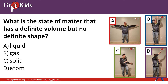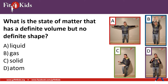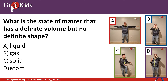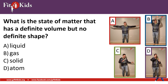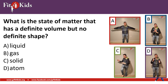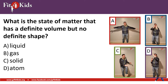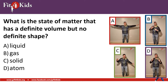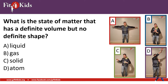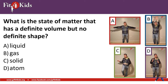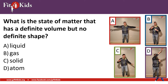What is the state of matter that has a definite volume but no definite shape? A, liquid; B, gas; C, solid; D, atom. The correct answer here is A, arm circles — liquid. A liquid has a volume, but it takes the shape of whatever container it's put into.